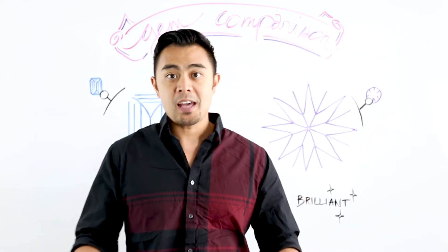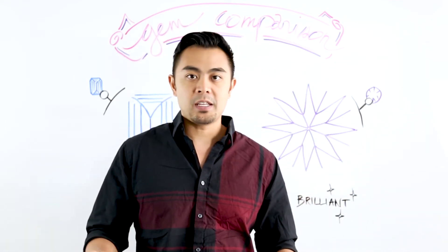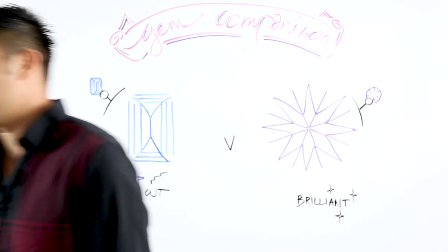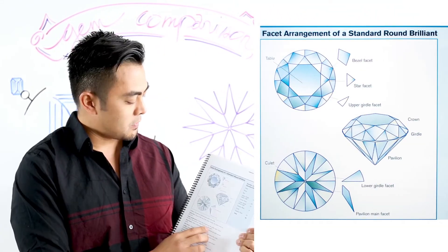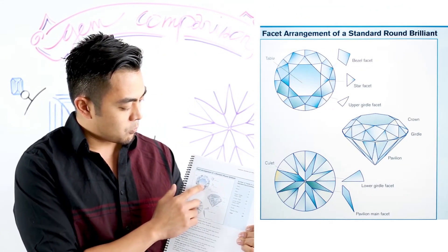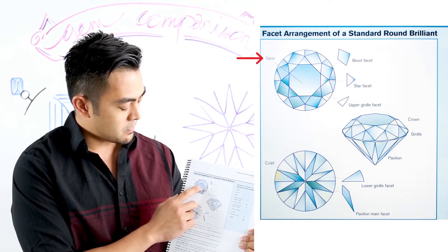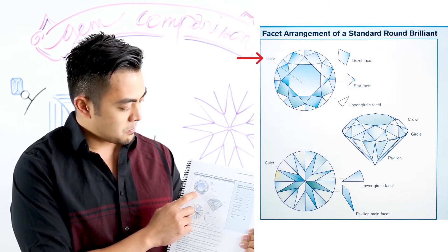So that is the main difference and let me go ahead and break it out for you. So let me take out this book. If you talk about the crown, the way it's broken out is if you notice here that the main facet would be the table facet, the top portion of the gem. That's the biggest facet.